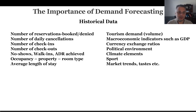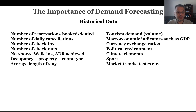Number of check-ins and check-outs and their timing can help schedule front desk employees. No-shows and walk-ins — similar to cancellations, no-shows can inform overbooking decisions. Walk-ins are people who arrive at the property directly without reservations. ADR achieved, occupancy of the property, what room types are most occupied, and average length of stay are all important property-level metrics. On the other side, revenue managers should also know area-related data at national, state, district, or local level.